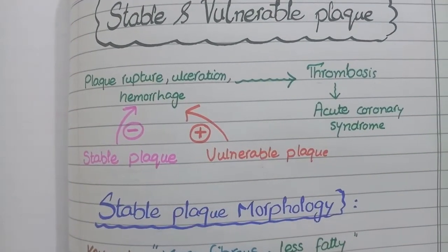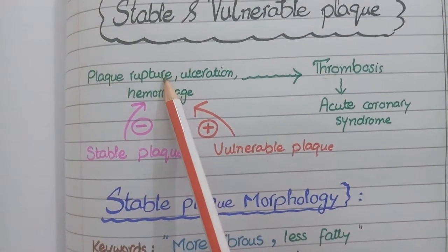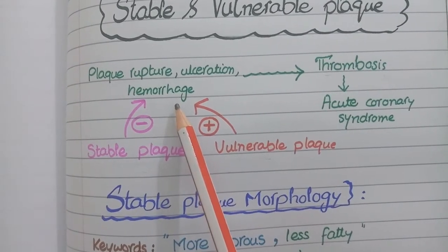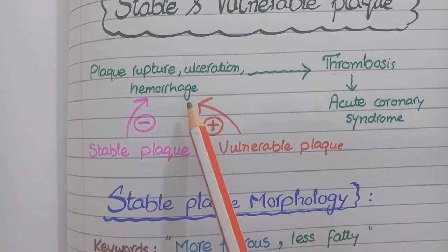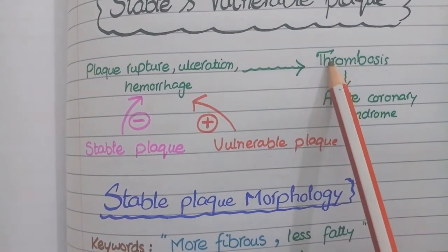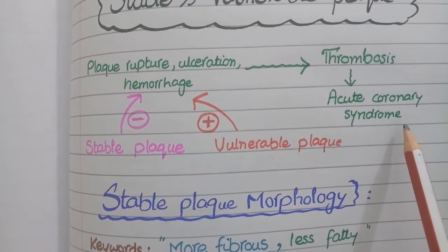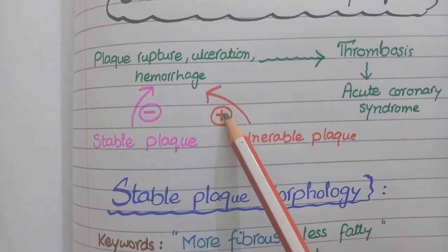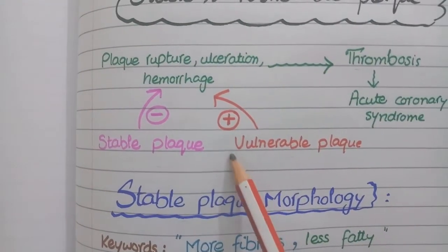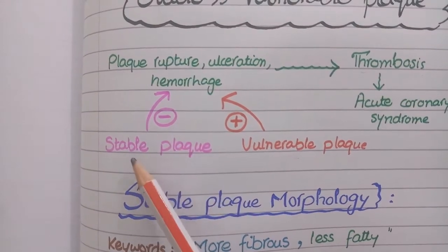Now we will discuss stable and unstable atherosclerotic plaques. Whenever an atherosclerotic plaque gets ruptured, ulcerated, or undergoes hemorrhage through neovascularized areas, the necrotic material inside the plaque gets exposed. Platelets then aggregate at such damaged areas, resulting in formation of a thrombus that fully occludes the vessel — this is known as acute coronary syndrome, including myocardial infarction and unstable angina. A plaque more likely to rupture, ulcerate, or undergo hemorrhage is called a vulnerable or unstable plaque, while one with less chance is called a stable plaque.